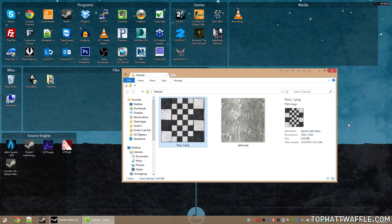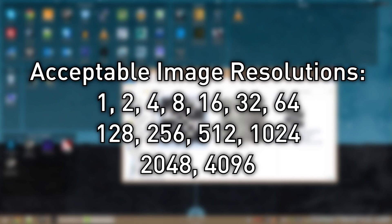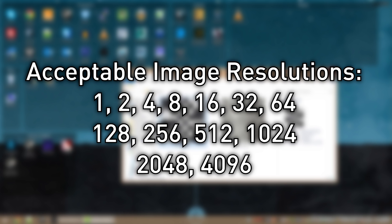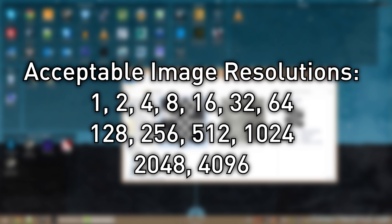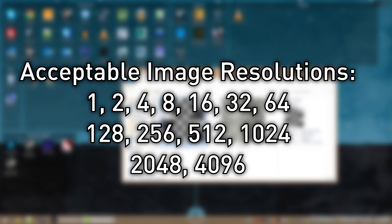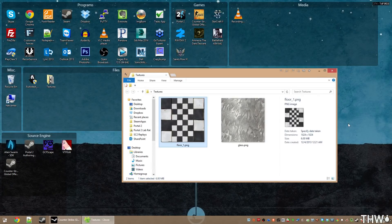These textures were created using software called FilterForge and are 1024 by 1024. Source Engine can only use textures that are a power of 2: 1, 2, 4, 8, 16, 32, 64, 128, 256, 512, 1024, 2048, and 4096 — those are the only values Source Engine will accept. Most textures in games are either 512 by 512 or 1024 by 1024.